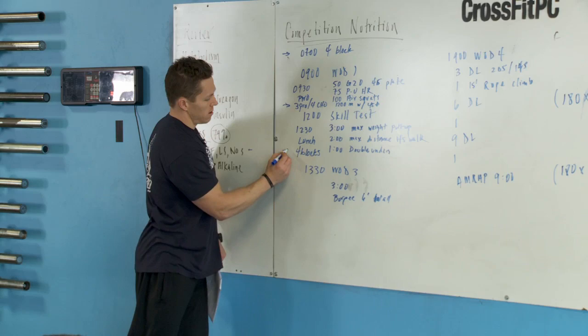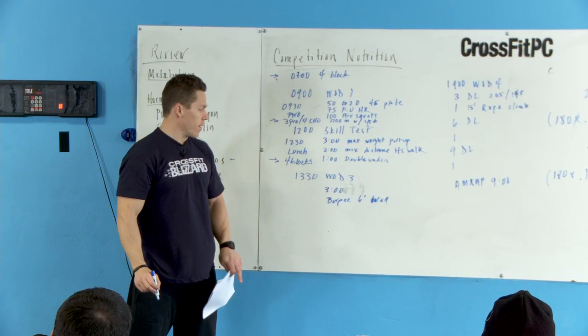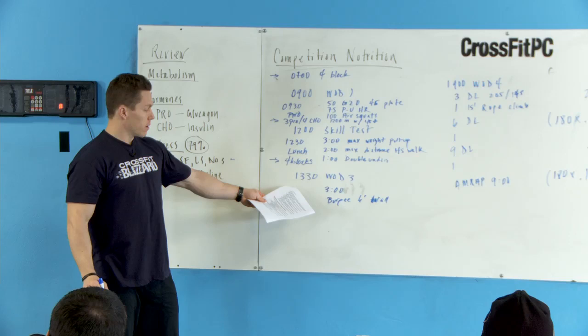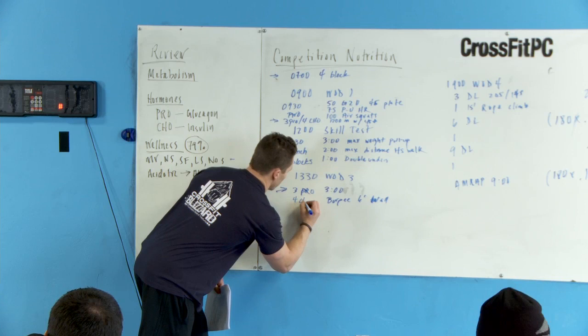1:30 rolls around, we definitely had time to digest that. For that workout number three, three minutes of burpees over a six foot wall, going to need a post-workout after that. So we're going to do three carbs, I'm sorry, three protein, four carbs. That's roughly a three block meal.